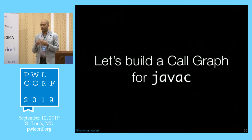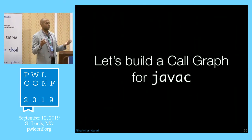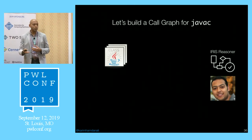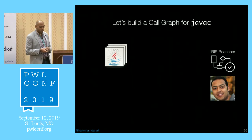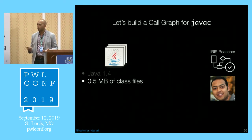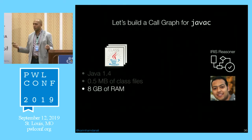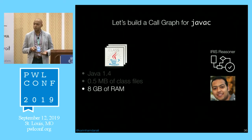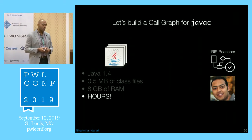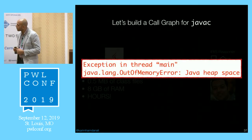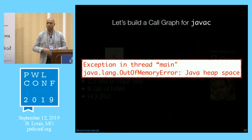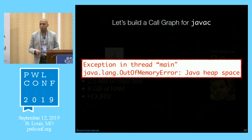I tried building a call graph for the largest Java program I could think of: javac, the Java compiler — only half a megabyte of class files, Java 1.4. I had a powerful machine with 8 GB of RAM. I ran the analysis multiple times, but each time it took hours and always terminated with an out-of-memory error: Java heap space. Regardless of how much heap space I gave it, it always ran out of memory.